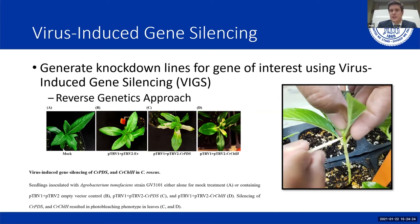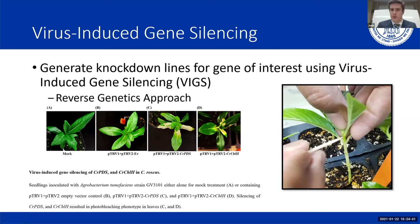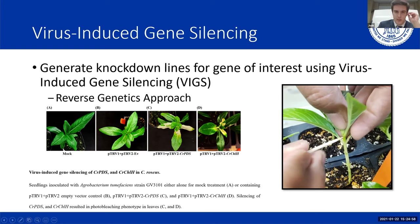For virus-induced gene silencing (VIGS), we generated knockdown lines using a reverse genetics approach. We use PDS and CHLH genes as visual markers — their photobleaching phenotype identifies where virus-induced gene silencing has occurred and where to harvest from. We are currently in the process of measuring alkaloid content from these transformants.